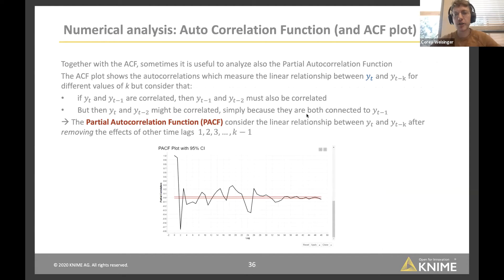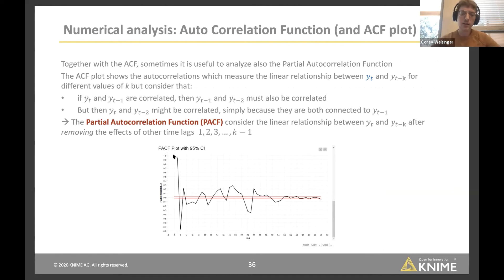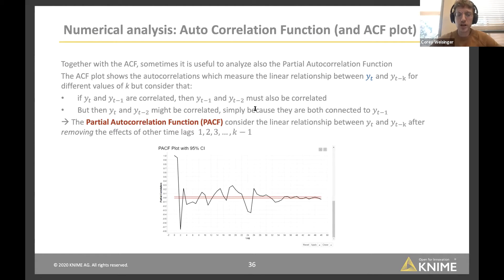The partial autocorrelation function — the PACF plot — is similar to the ACF but removes correlations due to chaining. For example, if t and t-1 are correlated, and t-1 and t-2 are correlated, then t and t-2 are correlated by default. The PACF removes those indirect relationships, showing only the exclusive correlation between t and each specific lag such as t-10 or t-12.